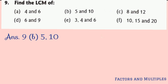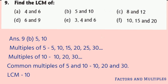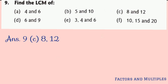Part b: 5 and 10. After writing the multiples of 5 and 10, we get 10, 20, and 30 as the first 3 common multiples. Out of these, 10 is the least common multiple of 5 and 10.